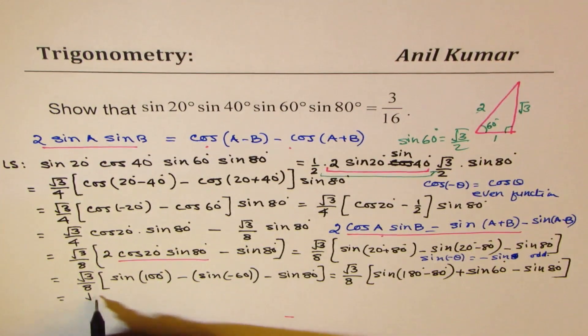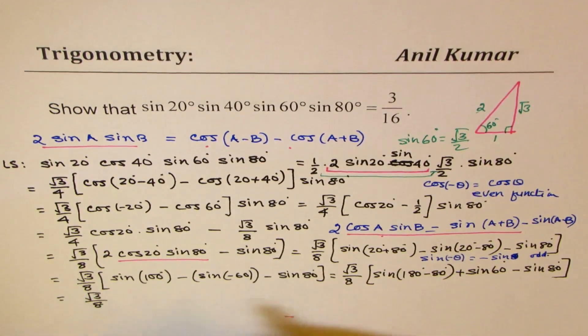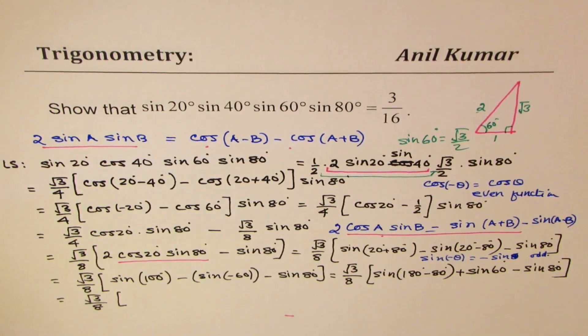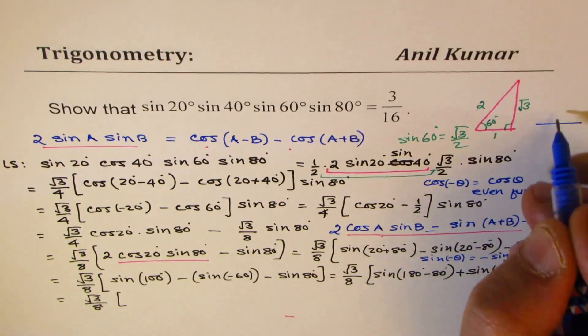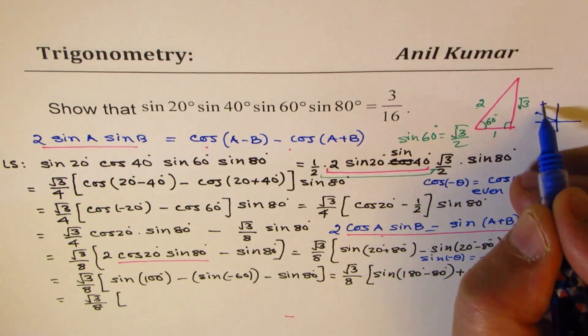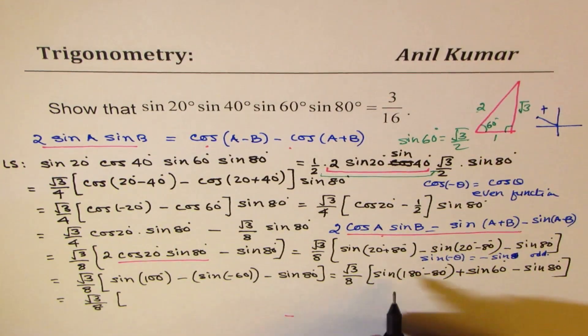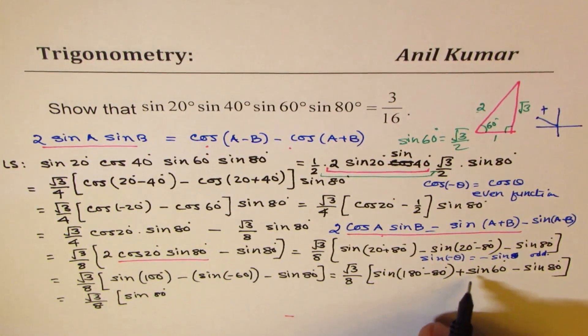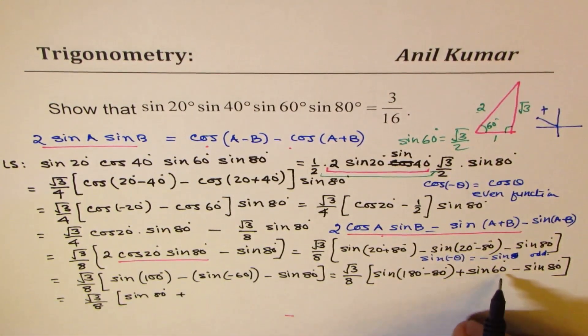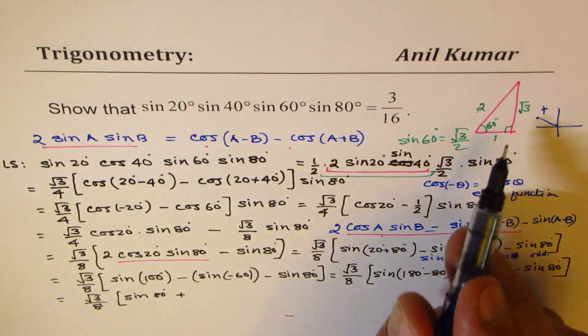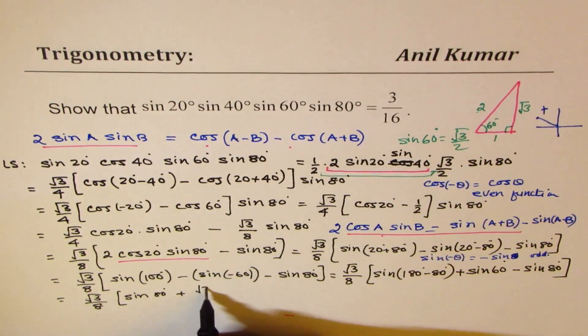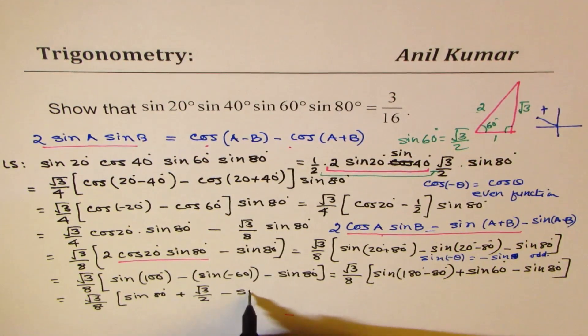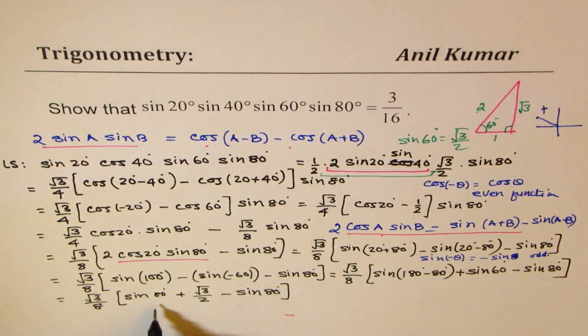Now, we have √3 over 8. Sin(180 - 80) is what? Now, that is, you are in second quadrant. So you are in second quadrant. So we're here. So it's positive. So it is sin 80°. Now, we have plus sin 60. I could substitute the value, √3 over 2. And we have minus sin 80°.